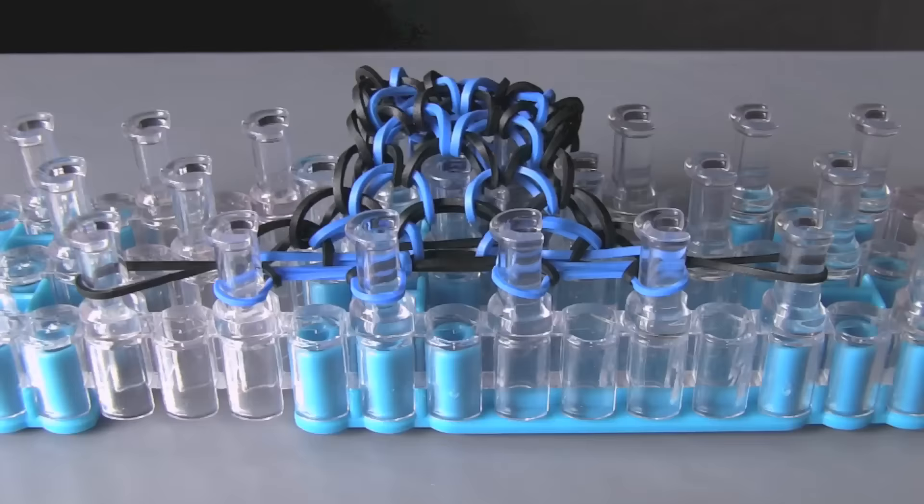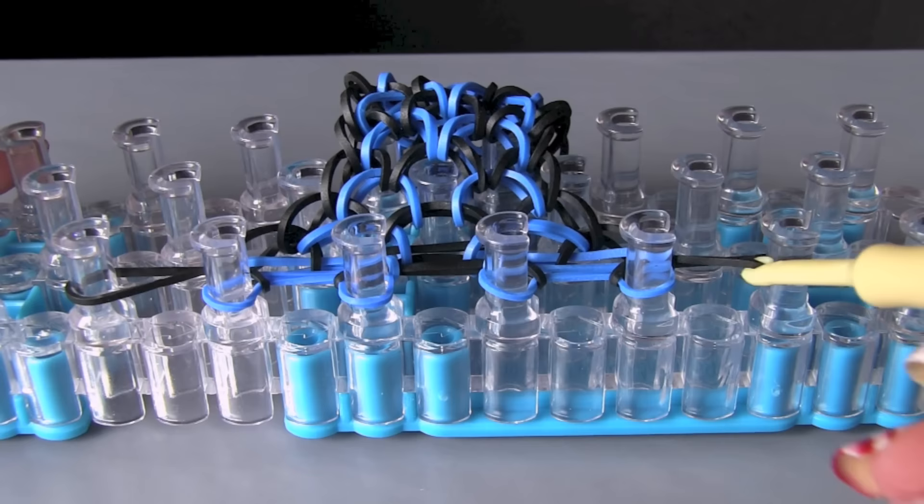Once it is long enough, you are going to put the c-clips on. So you are going to have to take the rubber bands and put them on 3 pegs as opposed to 6.